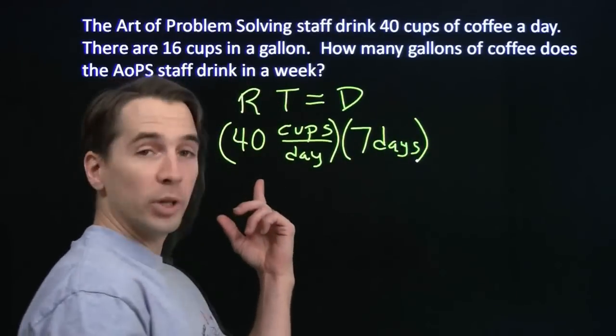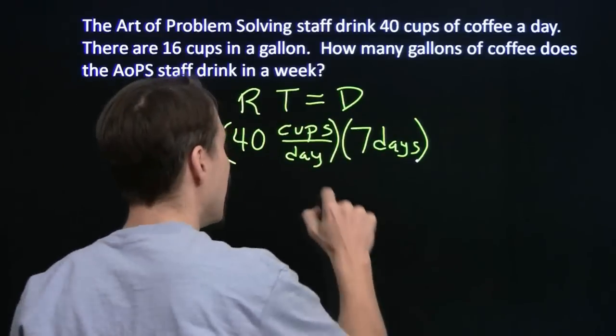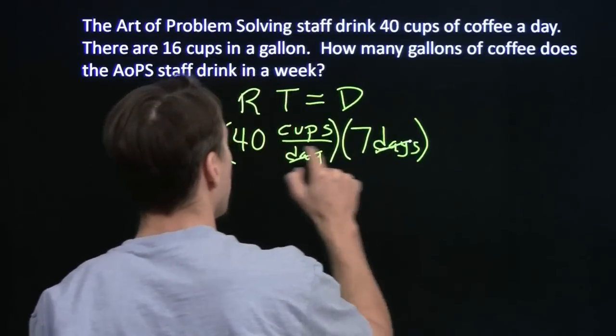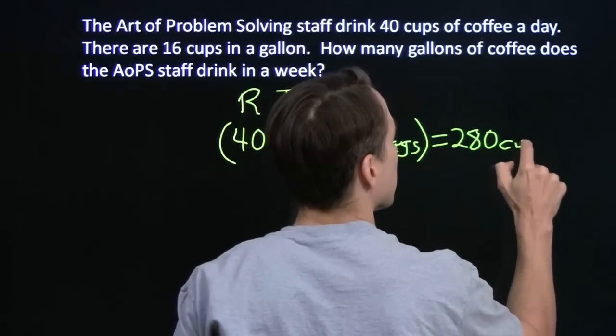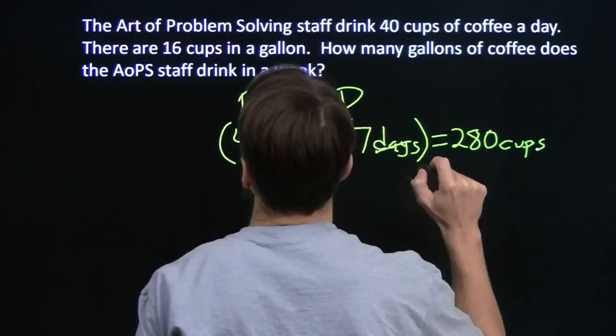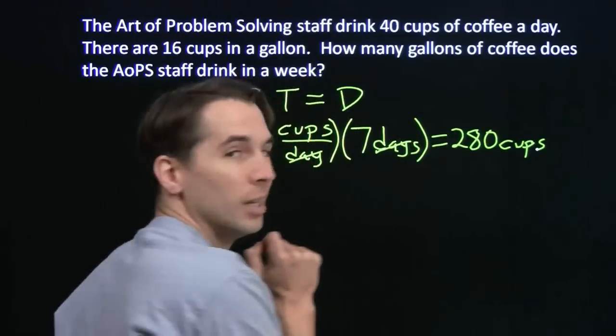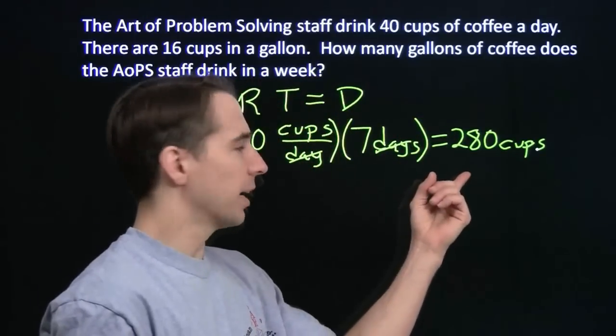So, our rate is 40 cups a day, our time is seven days. The days conveniently cancel out and we have seven times 40 is 280 cups. Uh-oh. The problem asks for gallons, I've got cups.